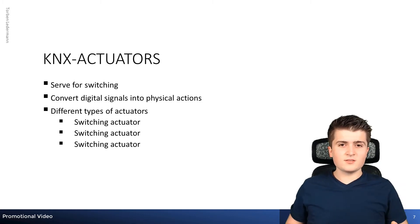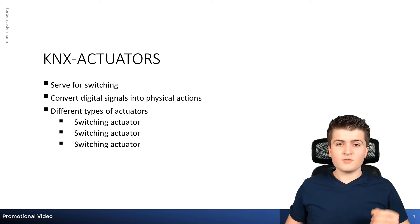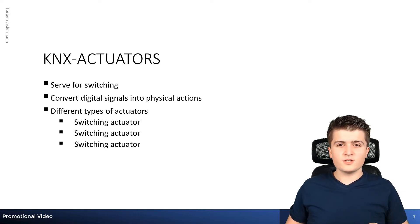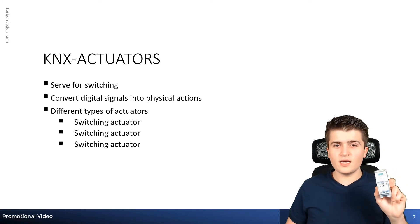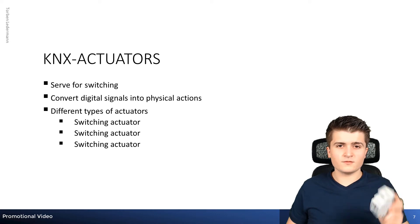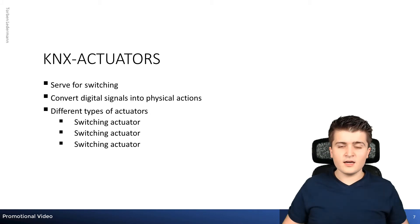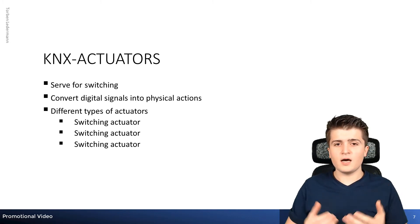Now that we know the sensors, we also need to know their counterpart: the actuators. With actuators we are able to convert digital KNX telegrams into physical actions. Depending on the action you want to perform there are different actuators — for example, a switching actuator to switch lights on and off, a dimming actuator to dim lights, and other actuators for specific applications like heating actuators and blind actuators.